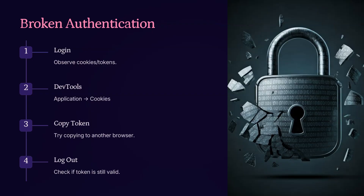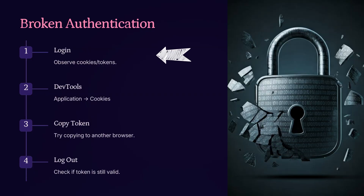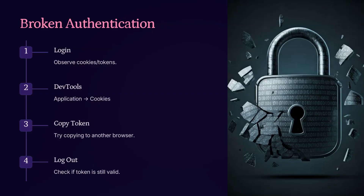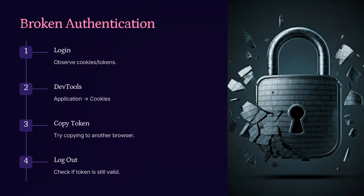Now let's look at broken authentication, a serious issue where attackers can hijack a user's session. Step 1: Log into the application and observe the cookies or tokens being generated in the browser. Step 2: Open the browser's developer tools and go to the Application tab, then navigate to Cookies. Step 3: Copy the session token, then try pasting it into a different browser or device to simulate a session hijack. Step 4: Log out from the original browser and test whether the token is still valid in the second browser. If it is, that means the session wasn't properly terminated — a classic sign of broken authentication. This shows why secure token management, session expiration, and logout enforcement are essential in any web application.